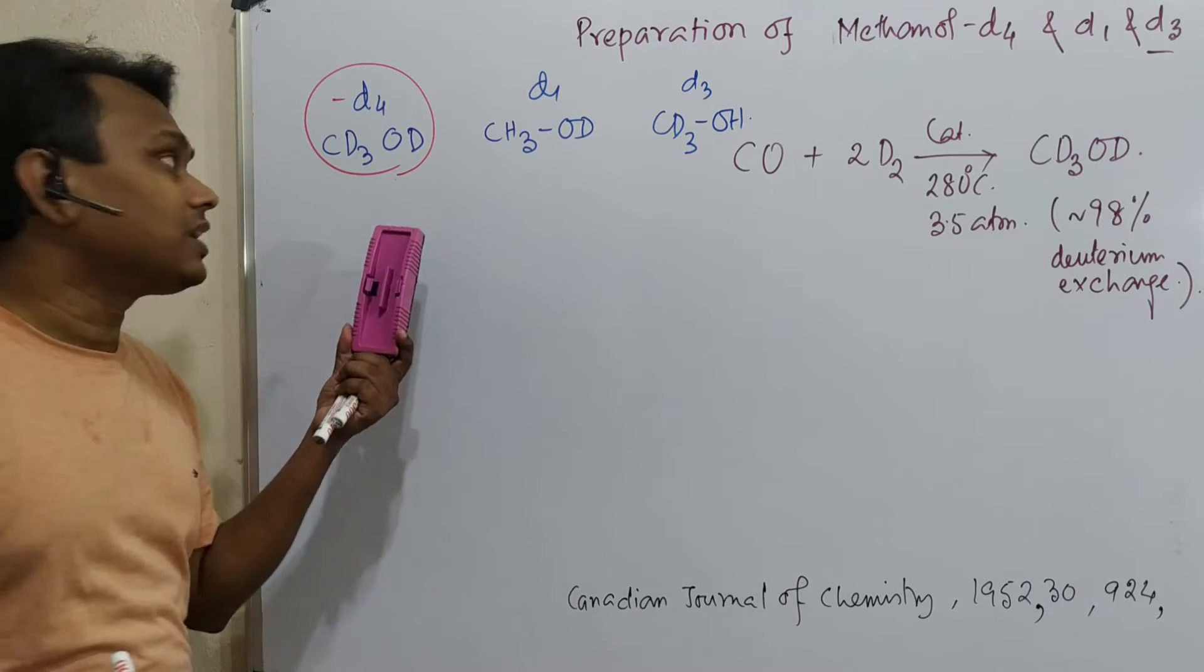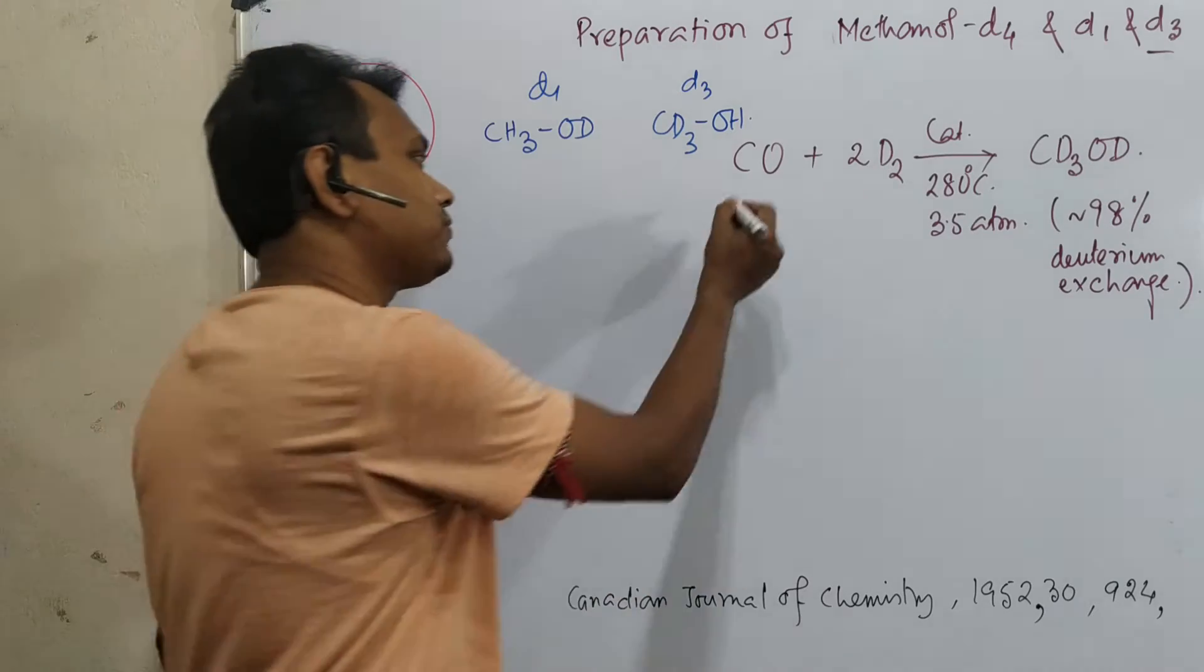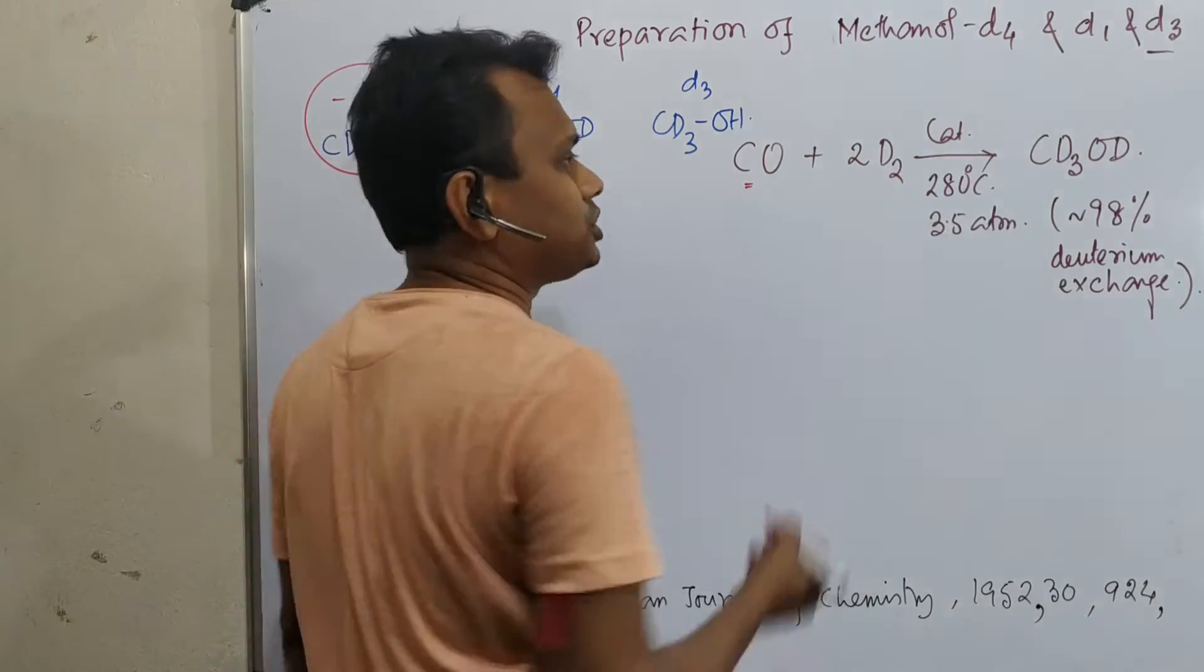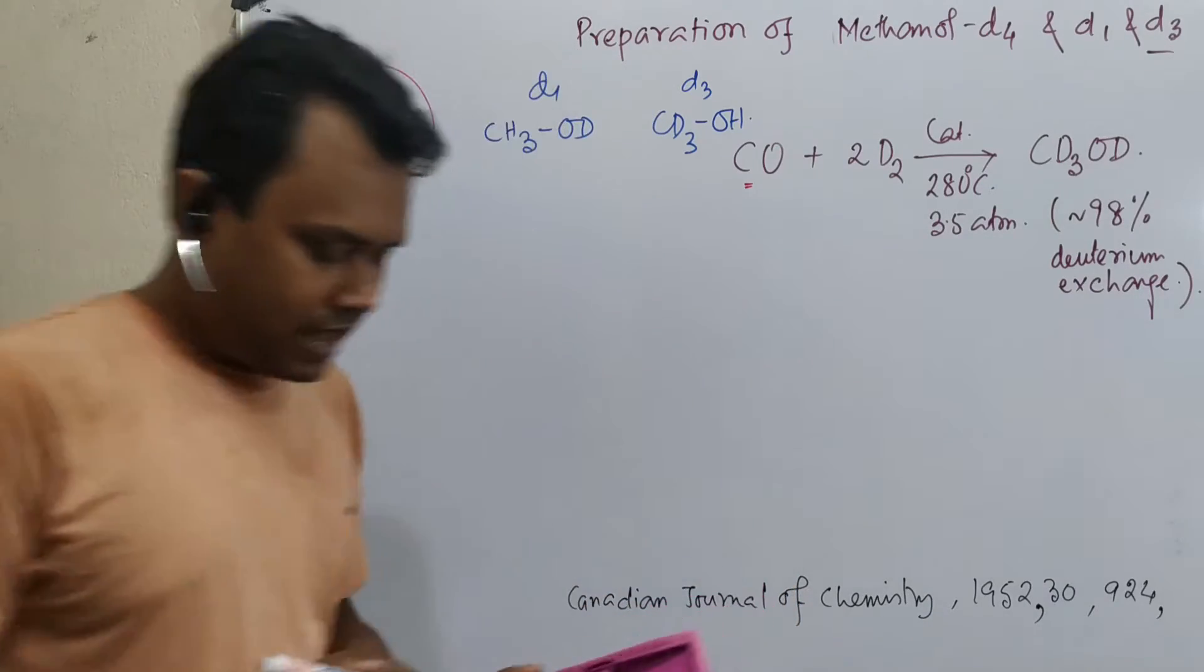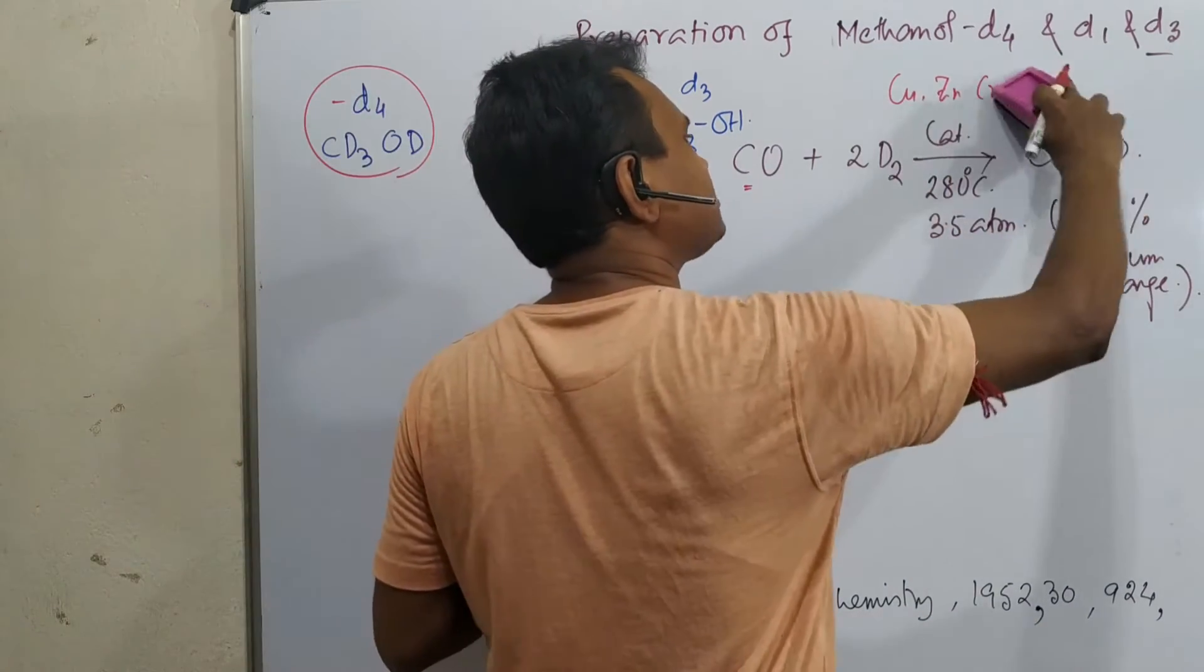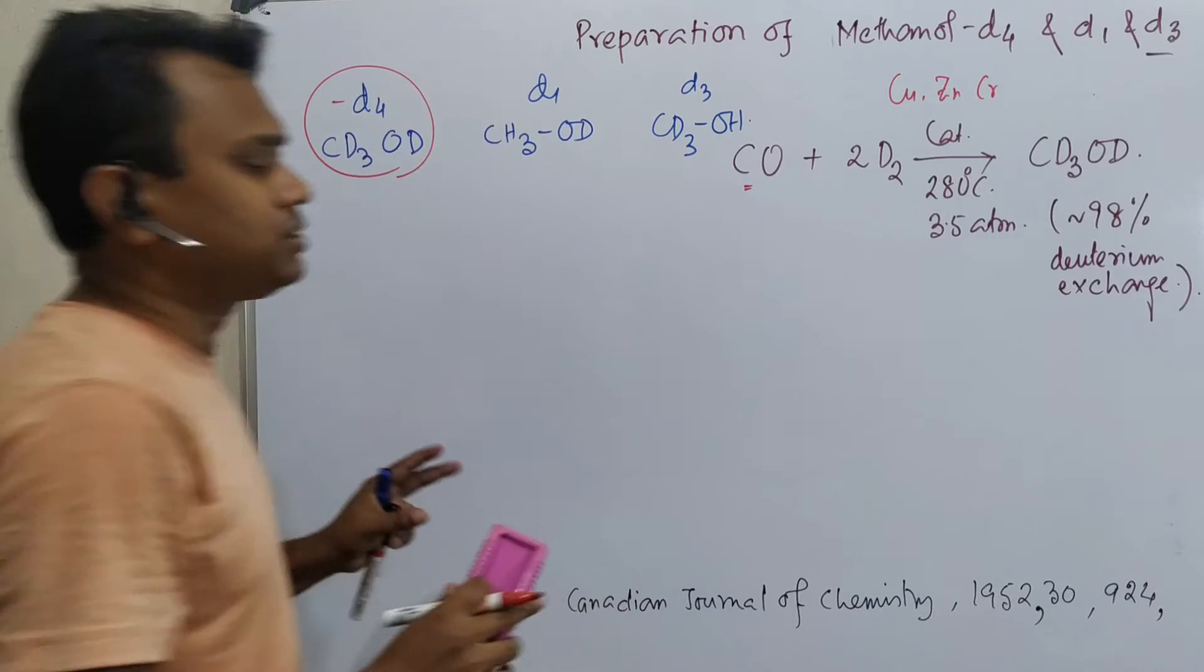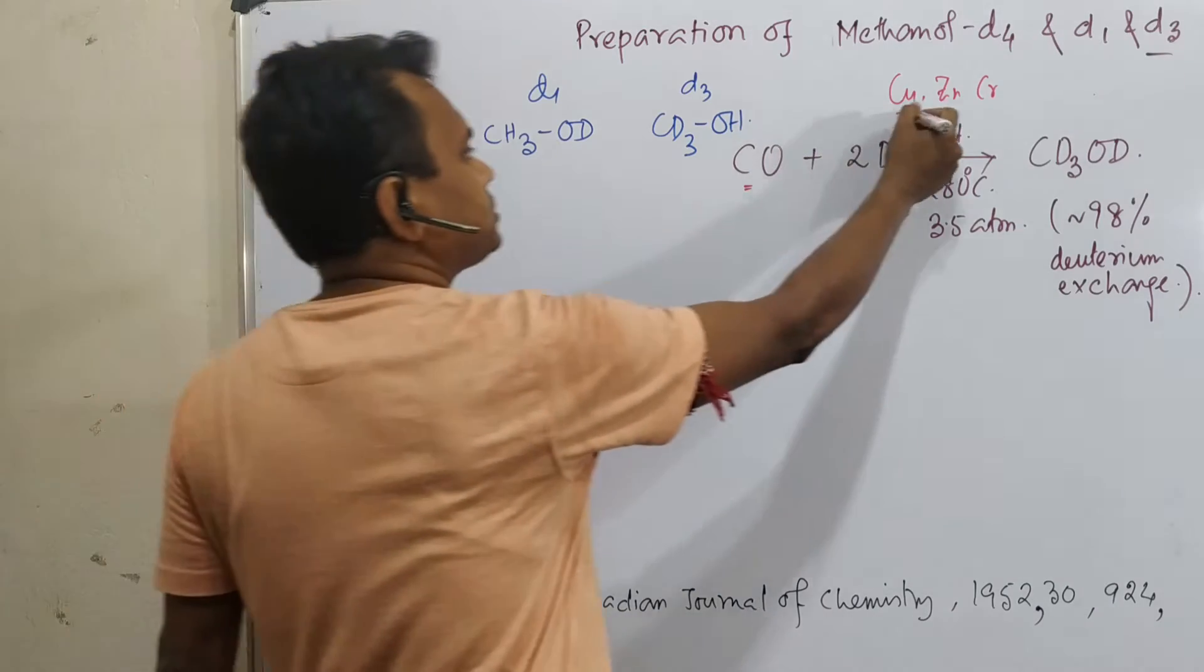Now, how to prepare this methanol D4? Normally methanol is also prepared from this carbon monoxide and hydrogen mixture, syngas, from syngas in presence of a catalyst. Better to say it is a solid catalyst, a copper-zinc-chromium mixed catalyst. Better to say three components are there: 49%, 43%, and 8% respectively each contribution.